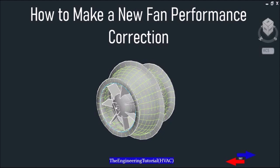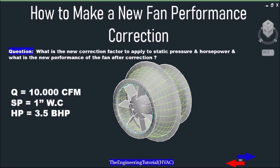70 degrees Fahrenheit at sea level. When operating conditions of fans vary significantly from standard conditions, air density should be taken into consideration. Fan pressure and horsepower vary directly with air density; however, fan air volume is not affected by air density. A cubic foot of air is always a cubic foot of air —